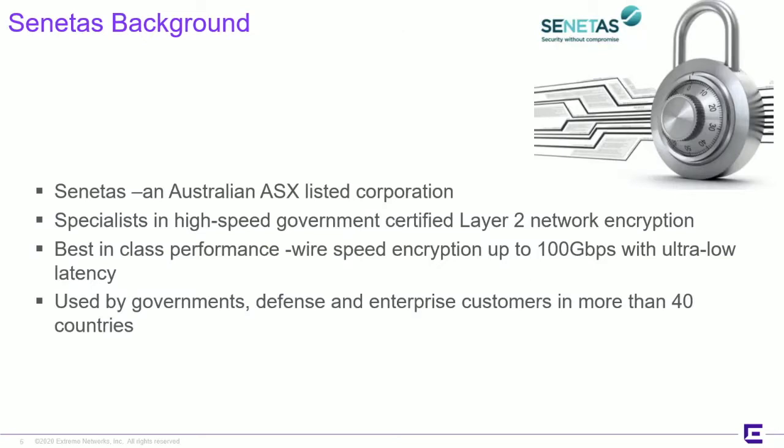A little background on Senatus: they are an Australian company that specializes in high-speed government-certified layer 2 encryption, and they are very agile and nimble at it. They are best-in-class wire-speed encryption up to 100 gigabits per second — and I believe they are actually working on 400 gig — with ultra-low latency. They are used by governments, defense agencies, and large enterprise customers, particularly finance, in more than 40 countries across the globe.